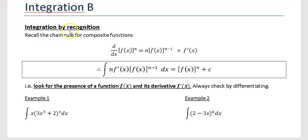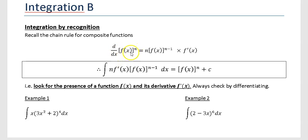In this video we're going to look at integration by recognition, or the other way of saying it is integration by inspection. If we look back at the chain rule for differentiation, if you differentiated f(x) to the power of n, you would differentiate with respect to the power — you would have n times f(x) and the power reduces to n minus one, then times the derivative of the function.